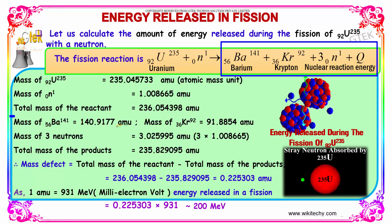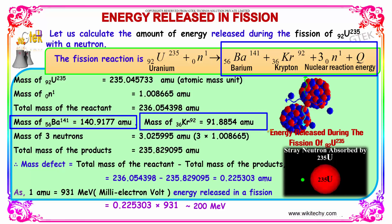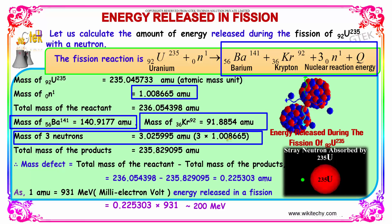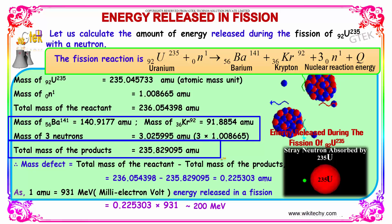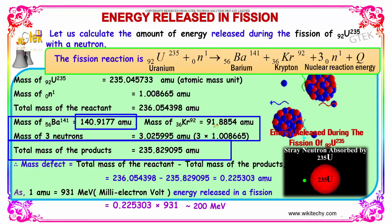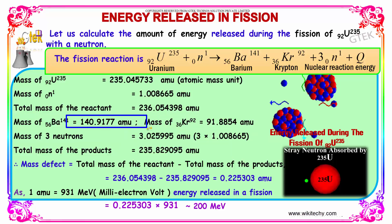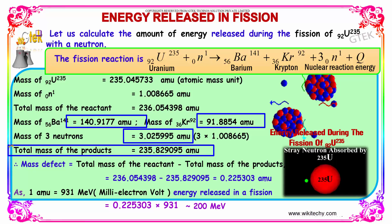The mass of barium is 140.9177 amu, the mass of krypton is 91.8854 amu, and the mass of the three neutrons is 3 × 1.008665 amu. Adding these three values gives us the total mass of the products.